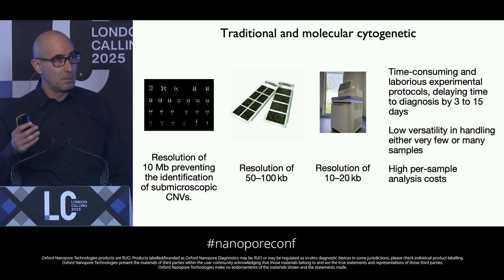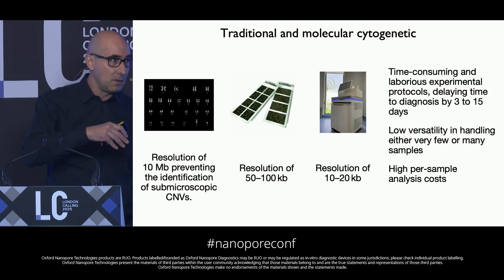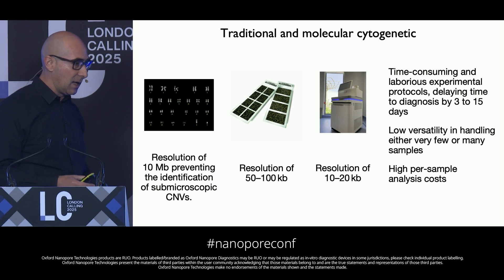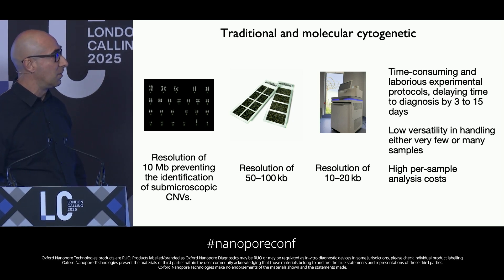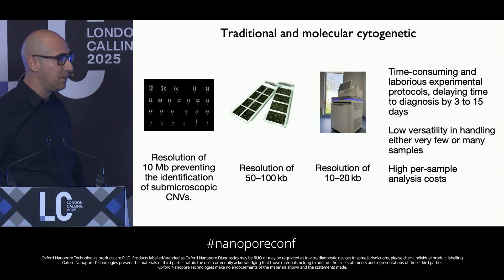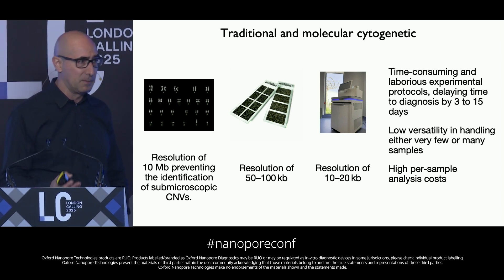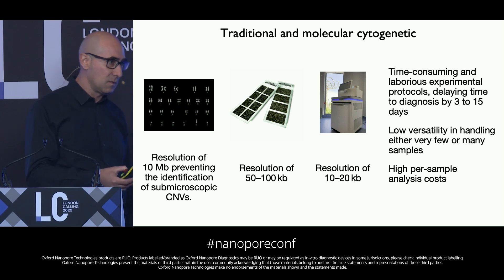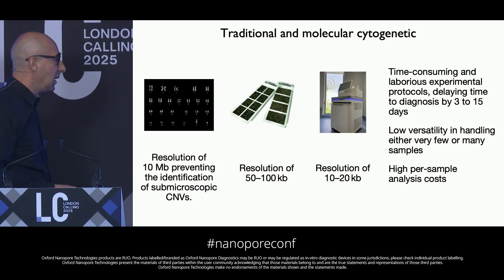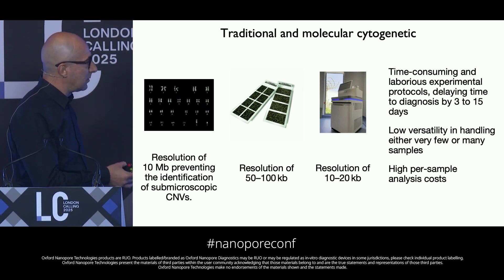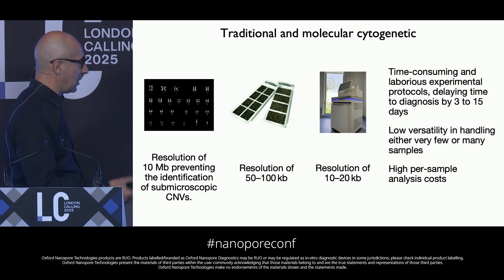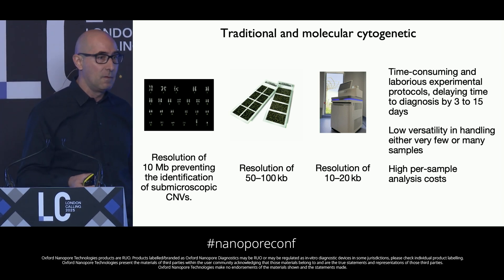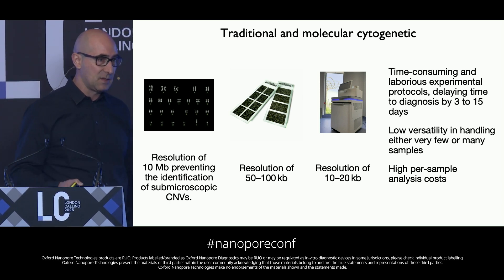Their identification is of fundamental importance for both prenatal and postnatal diagnosis. At present, we have three main tools to make cytogenetics analysis: conventional karyotyping, and molecular karyotyping based on microarray or NGS — sequencing by synthesis. The resolution limit of conventional karyotyping is in the order of 5–10 megabase pairs, preventing the identification of micro-duplications and micro-deletions.